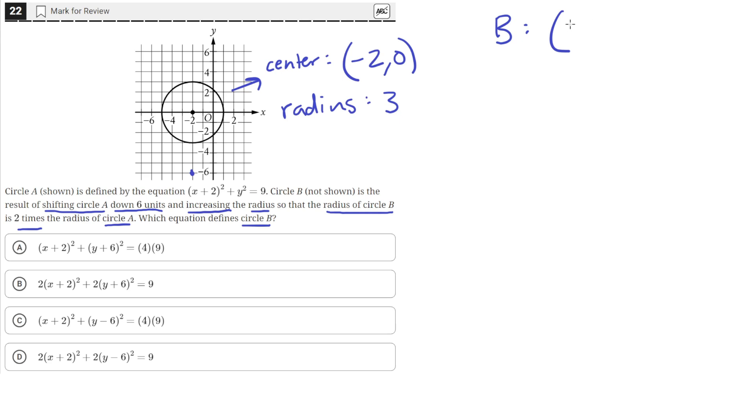So the center of circle B should be at negative 2, negative 6. And the radius of this new circle needs to be 2 times the radius of circle A. So the radius of circle A is 3, so the radius of circle B should be 6.